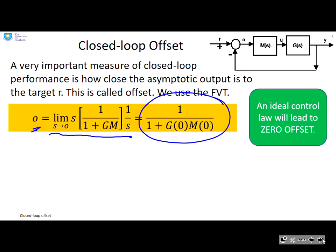Now, an ideal control law will lead to zero offset. So how are we going to get a zero offset? Well, in simple terms, we can get a zero offset if this term down here, one plus G of zero, M of zero, is infinity.